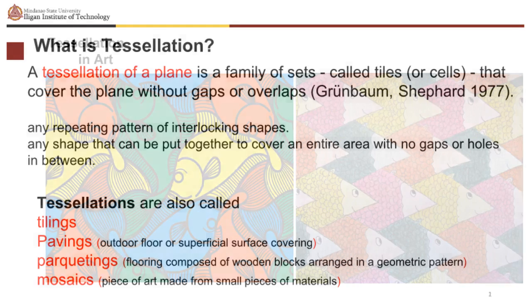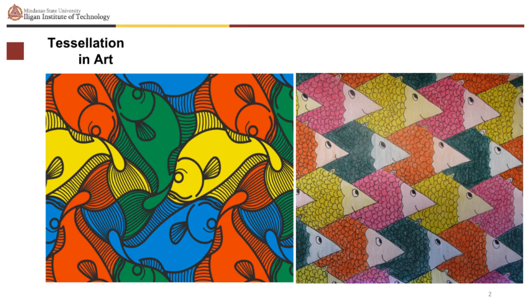The word tessellation is derived from the English verb tessellate, which comes from the Greek word tesseres, meaning four. In the English dictionary, the word tessera is used for a small tablet of wood.